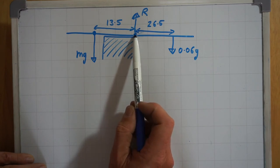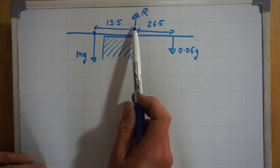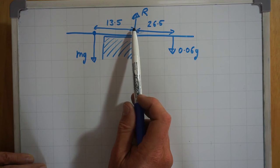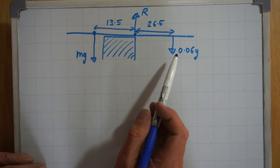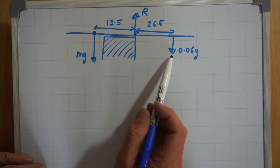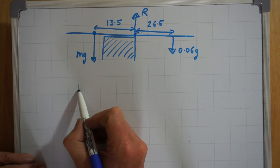We're going to take moments about this point so the reaction force will have a moment of zero. This force will have an anti-clockwise moment and this force will have a clockwise moment which will balance. So Mg times 13.5 will equal 0.06g times 26.5.